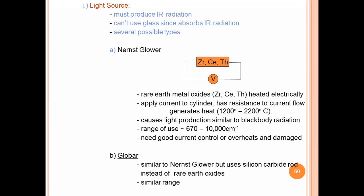Then second lamp is the Globar. It is similar to Nernst Glower but uses silicon carbide rod instead of rare earth metal oxides, heated electrically, and produces the particular radiations. It produces the range similar to Nernst Glower.